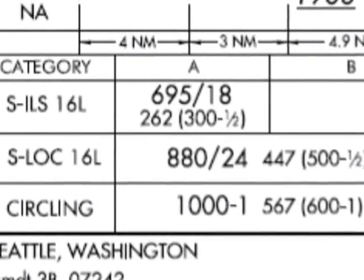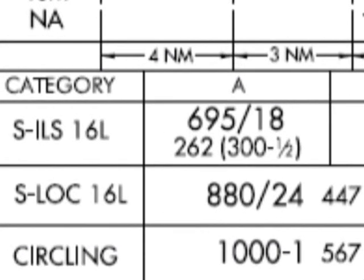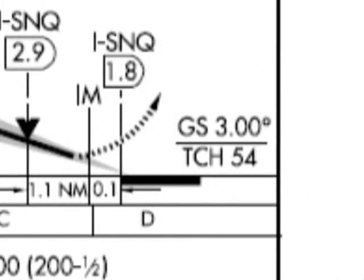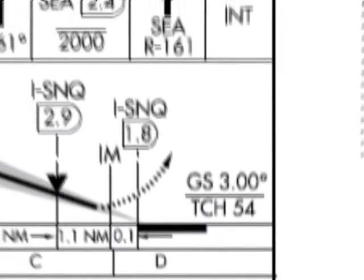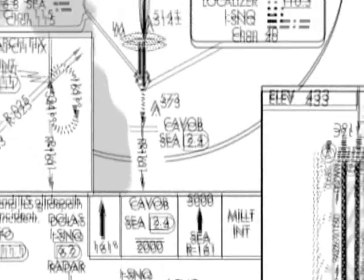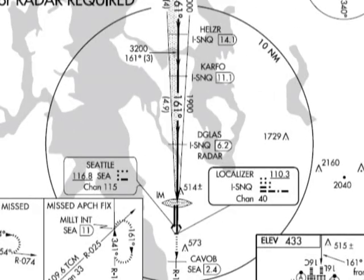For approach types, runway 16L: the S-ILS 16L indicates a straight approach for runway 16L. This means there will be little course deviation from 161, and once you reach the missed approach point you'll fly directly to the runway threshold for landing. In real-world flying, you wouldn't be allowed to circle around the field in a pattern when flying this approach.